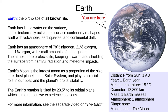Earth — the birthplace of all known life, except a few jellyfish, rats, and other small animals taken on space missions as experiments. Earth has liquid water on the surface, is very tectonically active, and the surface continually reshapes itself with volcanoes, earthquakes, and tectonic drift. Earth's atmosphere is 78% nitrogen, 21% oxygen, and 1% argon, with trace amounts of other gases and a varying amount of water. The atmosphere protects life, keeping it warm and shielding the surface from harmful radiation and meteorite impacts. We have one moon which is over a quarter the size of Earth — the largest moon proportionally compared to its planet in the solar system. The moon plays a crucial role in our tides and stabilises the Earth's orbit and rotation. The Earth's rotation is tilted by 23.5 degrees to its orbital plane — this is the cause of our seasons.